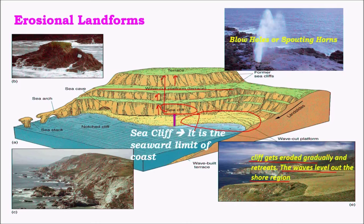Blowholes, or spouting horns, are important landforms observed where beaches are rocky. Due to holes in these rock structures, the pressure exerted by sea waves is seen as small explosions in these blowholes.